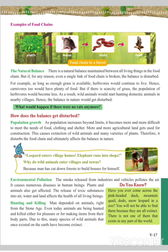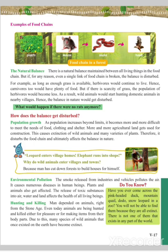Here is an example of a food chain. A plant, a mouse, a snake, and a hawk are shown. The mouse depends on the plant, the snake depends on the mouse, and the hawk depends on the snake. These are examples of different food chains.